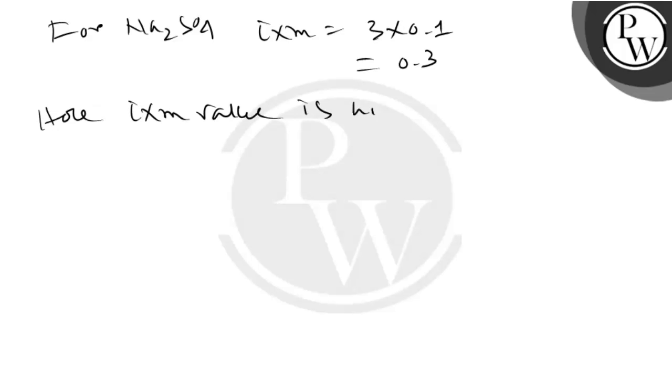For Na₂SO₄, i into m is equal to 3 into 0.1, so that is 0.3. Here i into m value is highest for BaCl₂, so it will have the lowest freezing point.